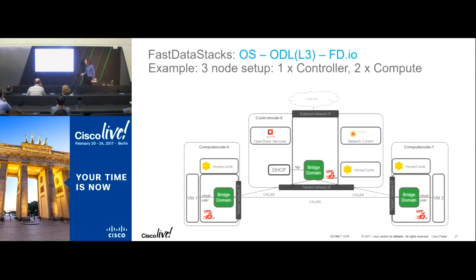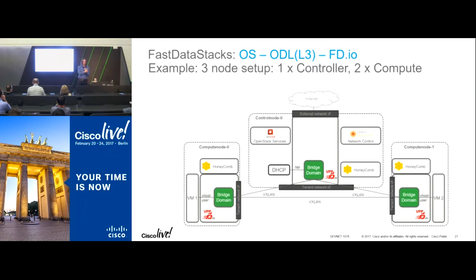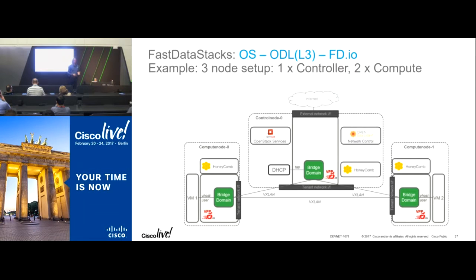Going one step further — which is what we're actively building right now — we're replacing QRouter and putting all its functionality into VPP. That means doing NAT and external routing in VPP. NAT is now there; routing was there from the beginning, but we had to be able to configure NAT entries, which was added in the last release 17.01. We're hoping to introduce this full L3 setup to the market with the next OPNFV release in late March.